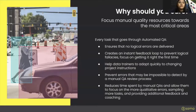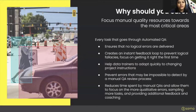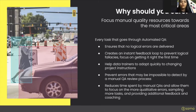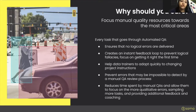Why should you care? The most fundamental reason is it allows you to focus your manual quality analyst resources and time toward the most critical areas. If we can guarantee that a certain type of error would never come through, we're saving you time and energy without compromising on the quality of your training dataset. Every task that goes through AutoQA has a guarantee of no logical errors being delivered to you. It also creates an instant feedback loop to prevent logical fallacies, encouraging agents to get it right the first time — they see the error message, learn, and fix it before moving to the next task.